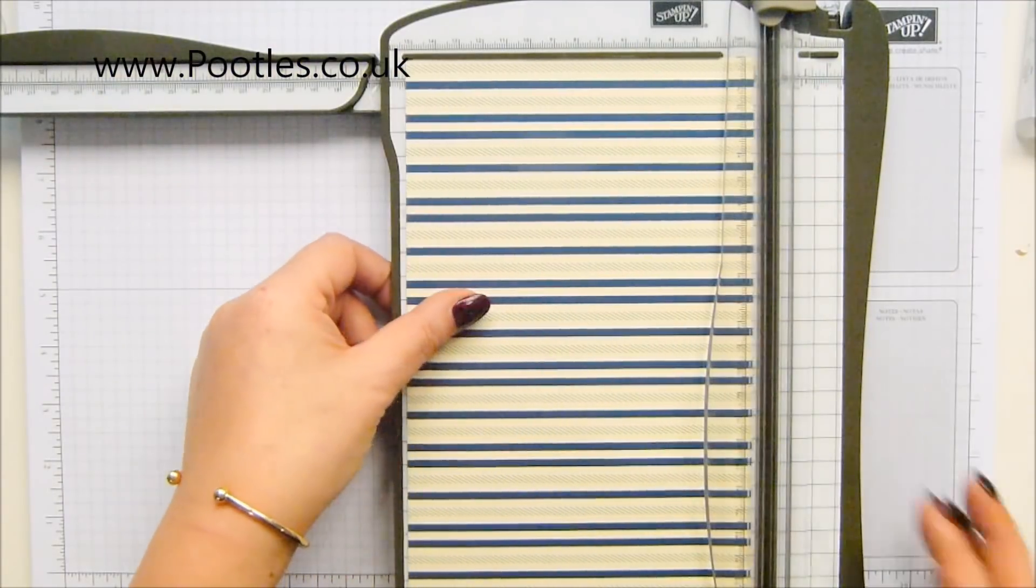And then this lovely stamp set. Oh, I think I've just got a kitten. I have got a kitten. It's just appeared in the room. They were sleeping.